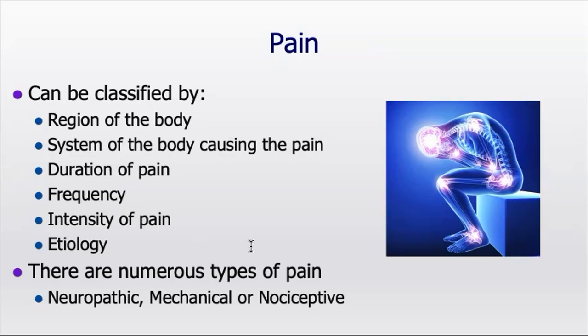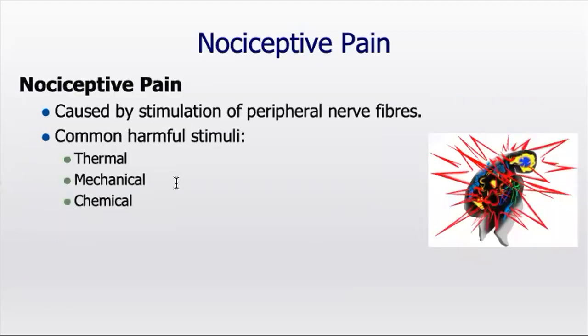There are also a number of different types of pain that your body can perceive: neuropathic pain, mechanical pain, nociceptive pain, chemical, temperature — all different types. We discussed a number of those mechanoreceptors last week. Nociceptive pain is pain caused by stimulation of peripheral nerves and can be in the form of thermal, mechanical, or chemical irritation. These are the most common painful stimuli we experience from the periphery that enter into the central nervous system.